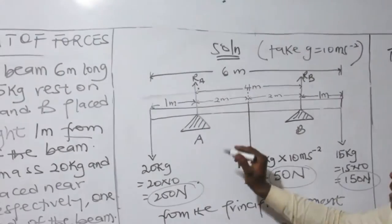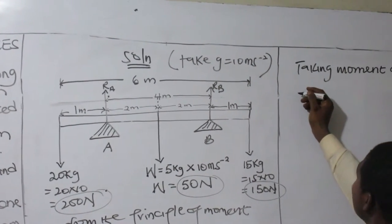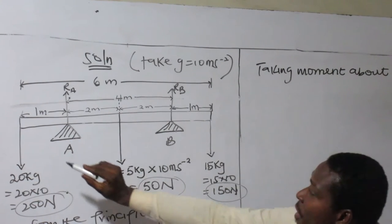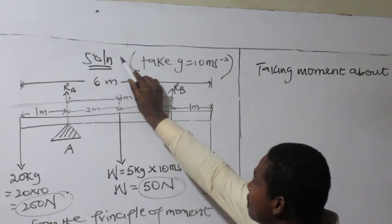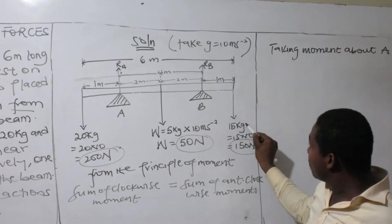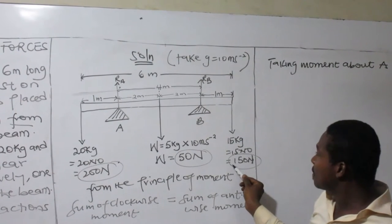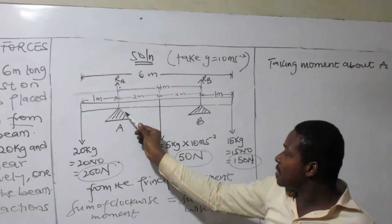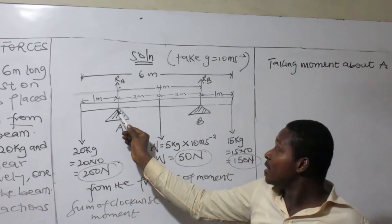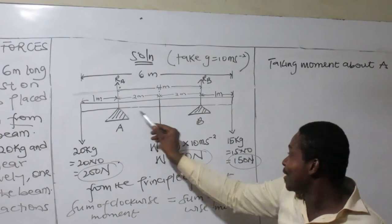Taking moment about A means my focus is on point A — forget about the other support. So for clockwise moments, I emit a force and note the distance, then I emit another force of 50 N also on the way. Because if 50 decides to go this way, there's no business here — we are not taking moments about this point.